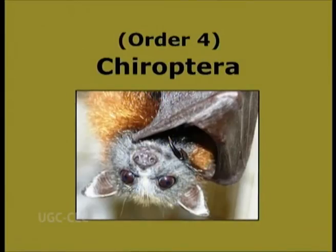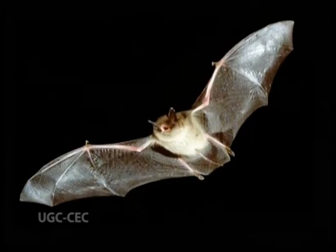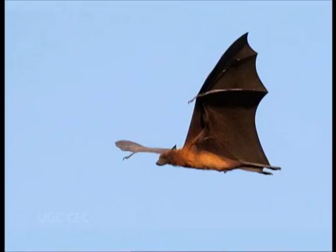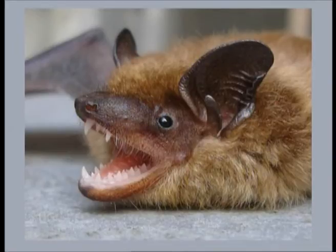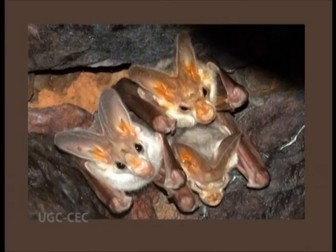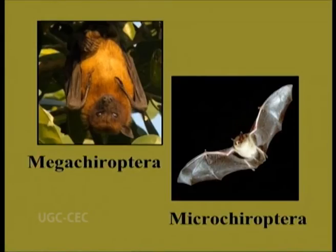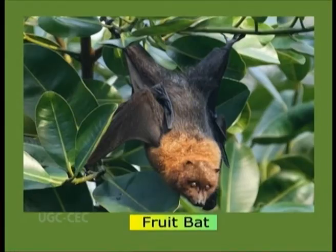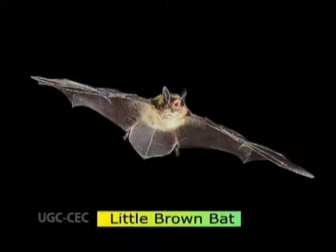Order 4: Chiroptera. Cheiros meaning hand, Pteron meaning wing — mammals whose forelimbs are modified into wings, called flying mammals. Hind limbs are very short and included in the wing membrane. Their teeth are very small, sharp and peg-like. They are nocturnal and capable of true flight. It has two suborders: Megachiroptera and Microchiroptera. Examples are fruit bats, flying foxes, little brown bat, and vampire bat.